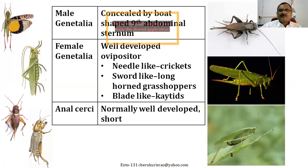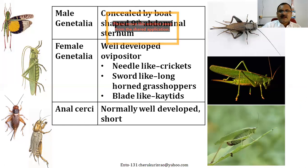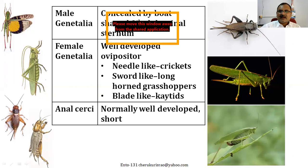Looking at the reproductive structures: in grasshoppers the genitalia is concealed. In crickets there is a very long needle-like ovipositor for laying eggs. In longhorn grasshoppers there is a sword-like ovipositor, and in katydids a blade-like ovipositor. Anal cerci are normally present — very long and unsegmented anal cerci are seen in crickets.